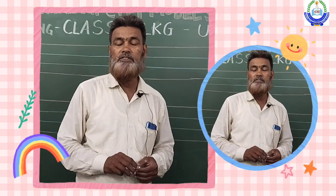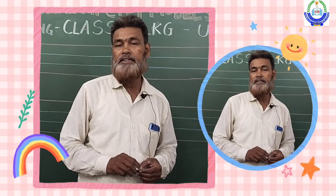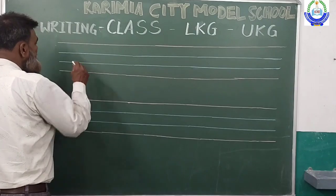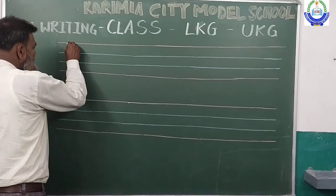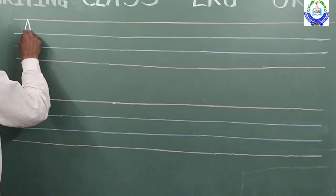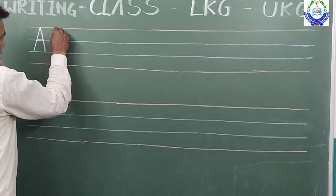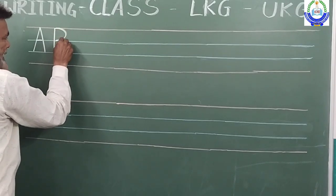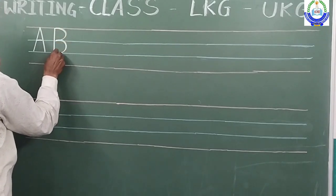So we will start. We will learn how to write A to Z in capital letters. See, you have to touch the red line to blue line. A, B. Be careful while you are writing.